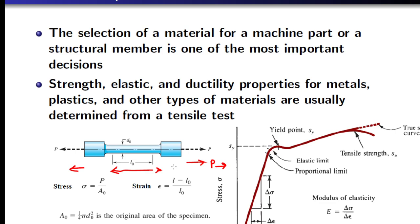Initially, before starting the experiment, we measure L0, that is the initial length between two points called gauge points. The distance between them is the gauge length — for example, it could be 50 mm. As the load is gradually applied, the length of the specimen increases. At each instant when the load is increased, the corresponding change in length is noted. We can then find the strain using the formula (L minus L0) divided by L0, where L0 is the initial length and L is the current length.